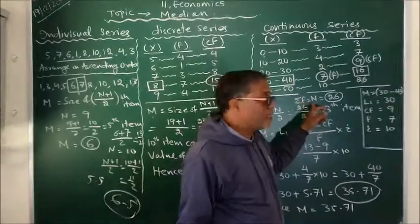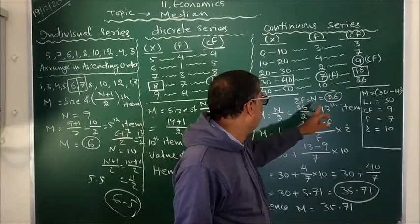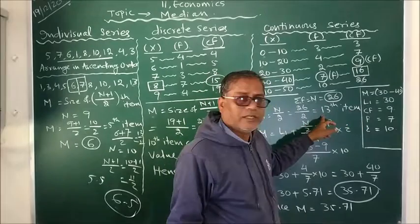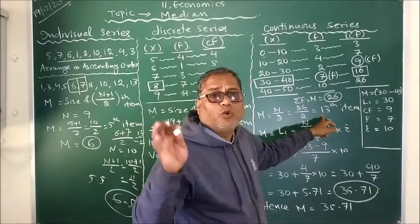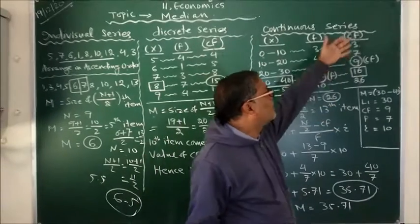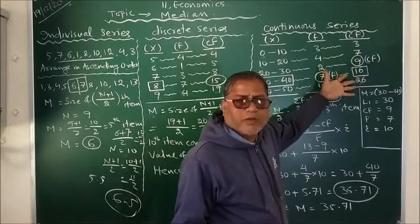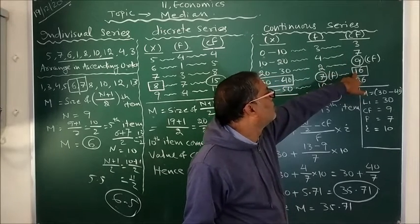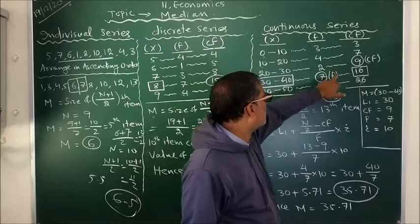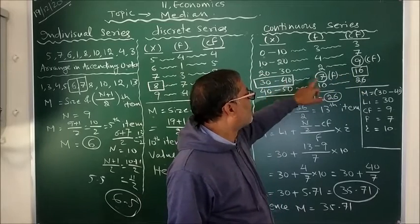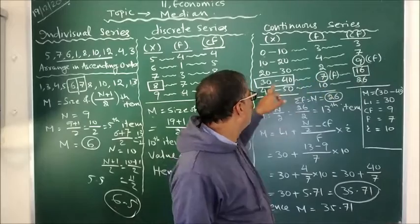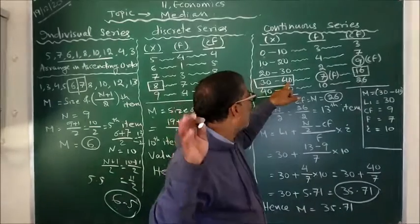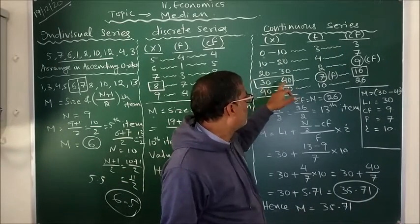So the median position is N upon 2 = 26 upon 2 = 13th item. The 13th item in the cumulative frequency column falls in the class where cumulative frequency reaches 16, and the relevant class is 30 to 40, where the frequency is 7. So in this class interval, the median value lies somewhere between 30 to 40.